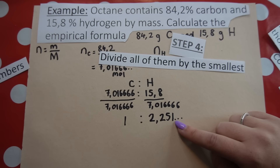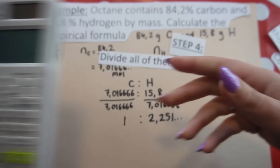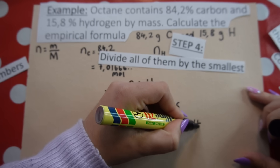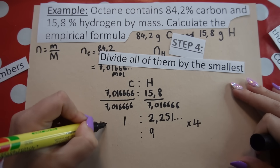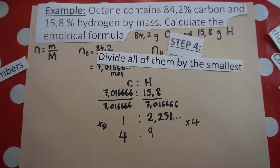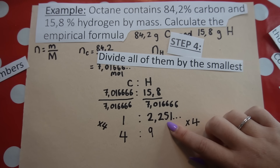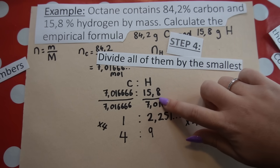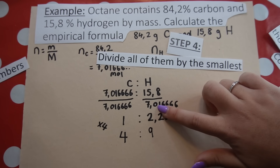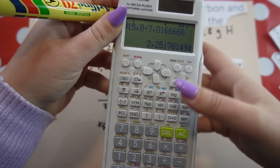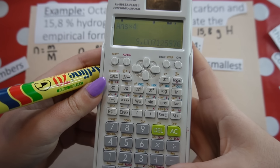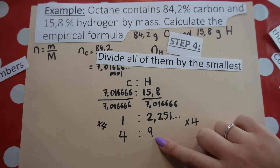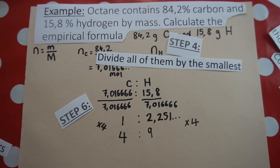When a decimal won't round to a whole number, we multiply to clear it. Since 0.25 is a quarter, multiplying by 4 gives a whole number: 2.25 × 4 = 9. We must multiply both sides by 4, so 1 × 4 = 4. Checking with the full decimal: (15.8 ÷ 7.016) × 4 = 9.007 ≈ 9.